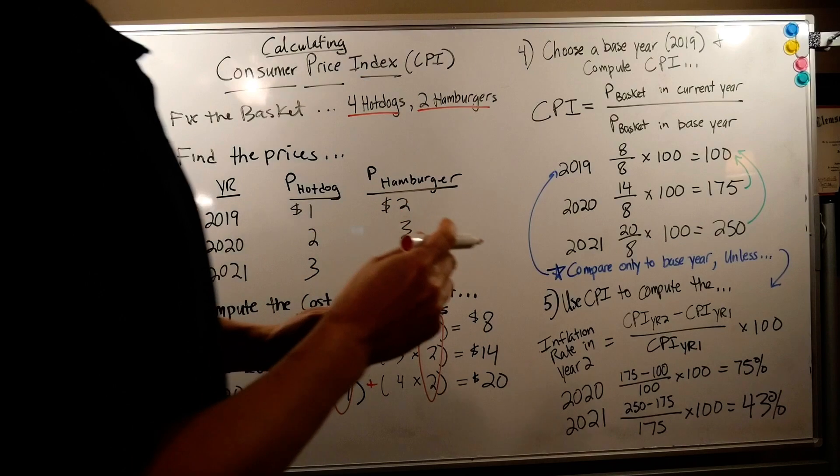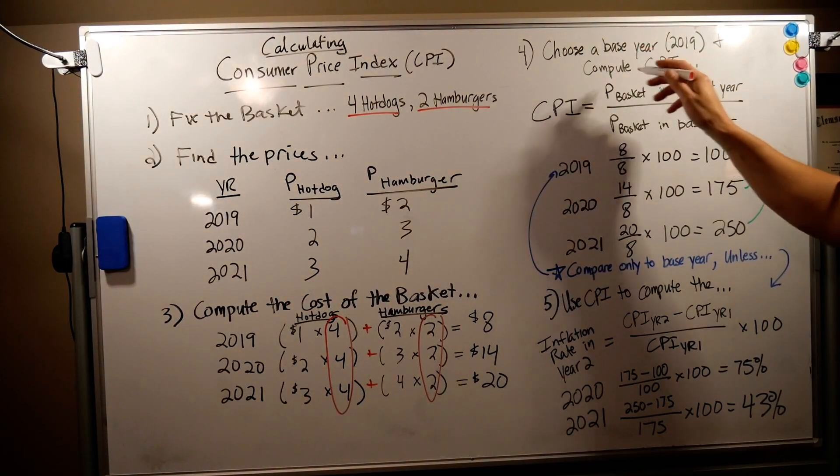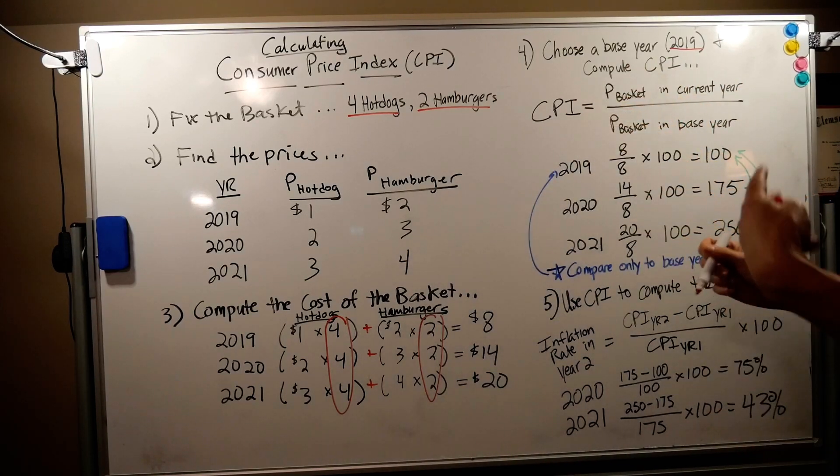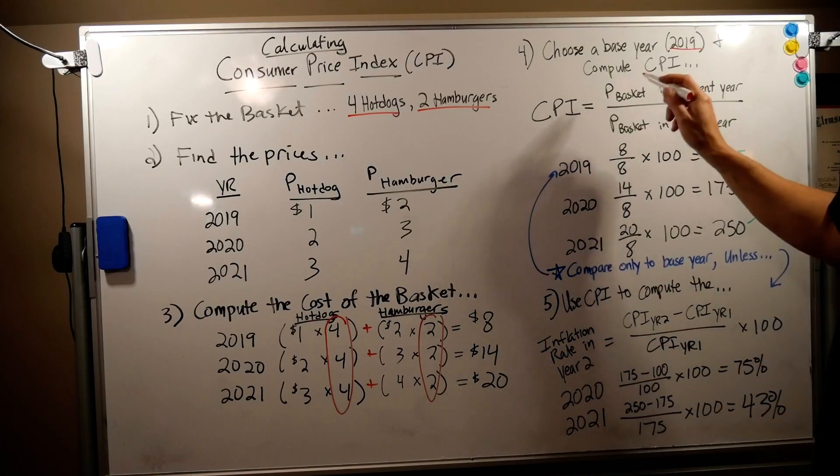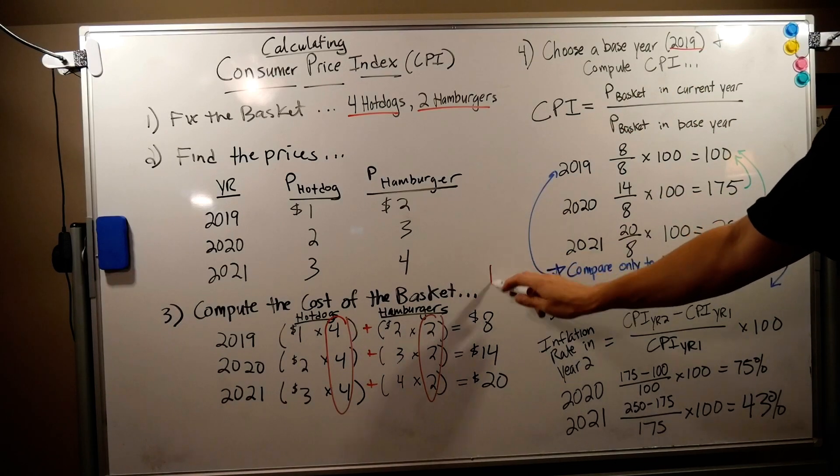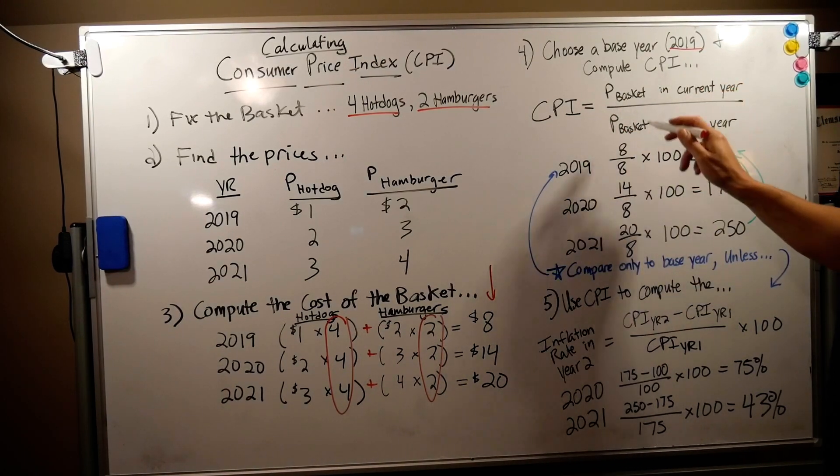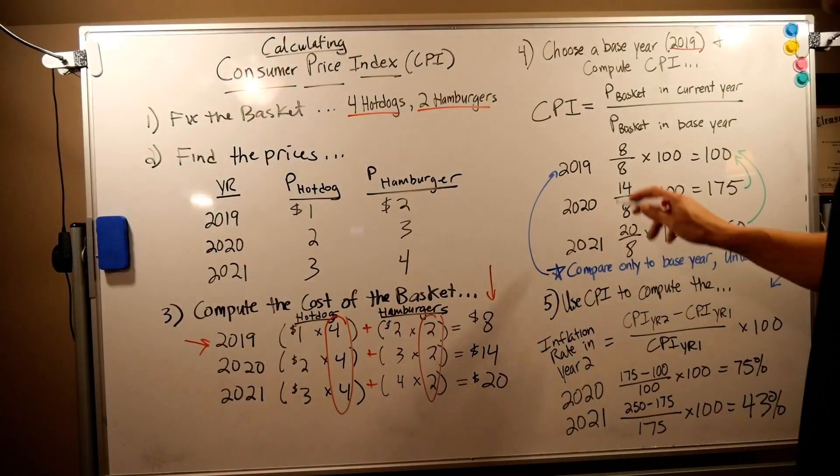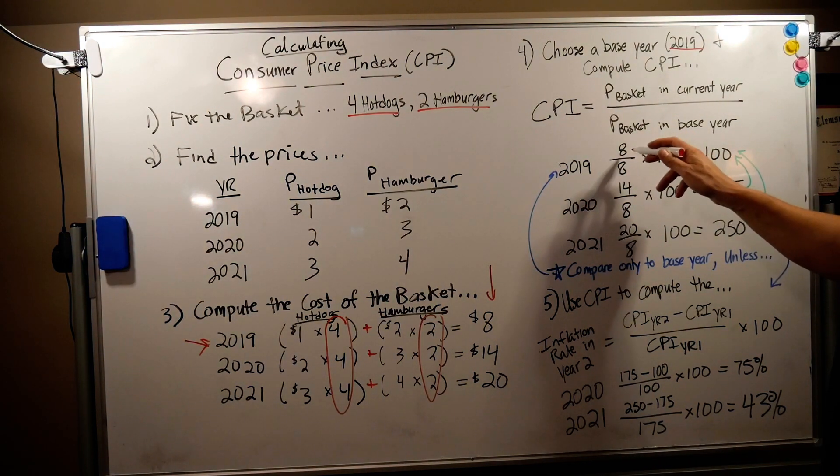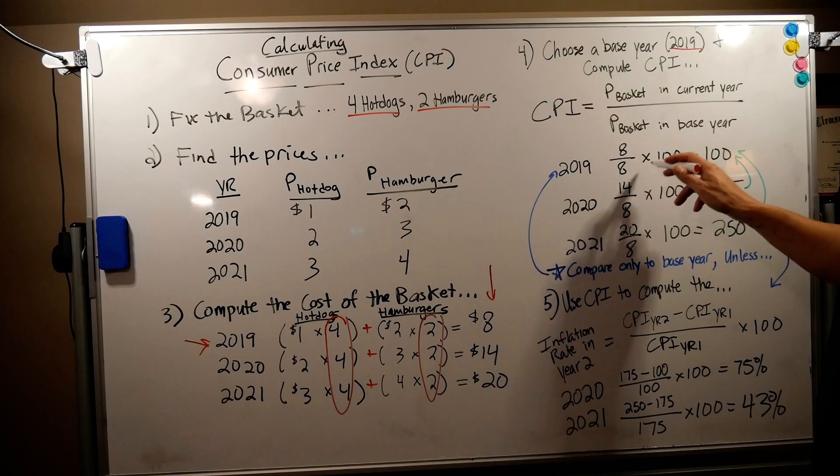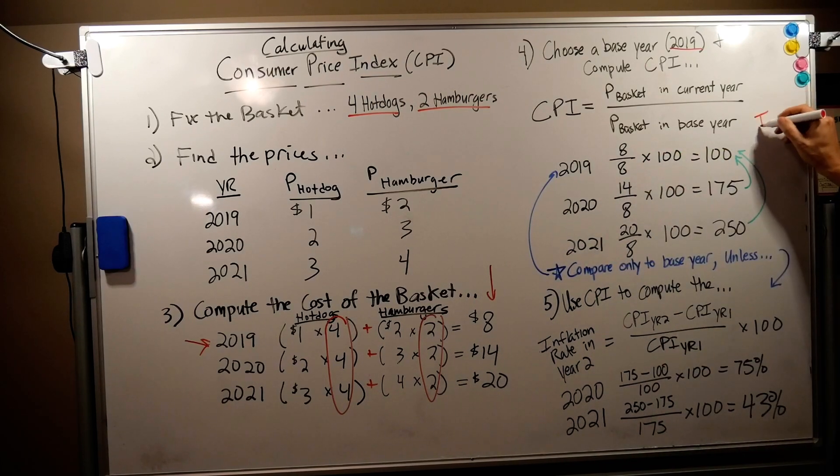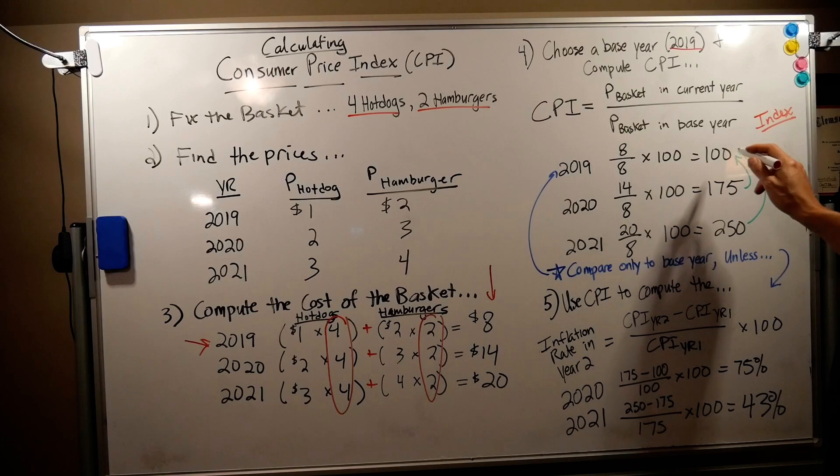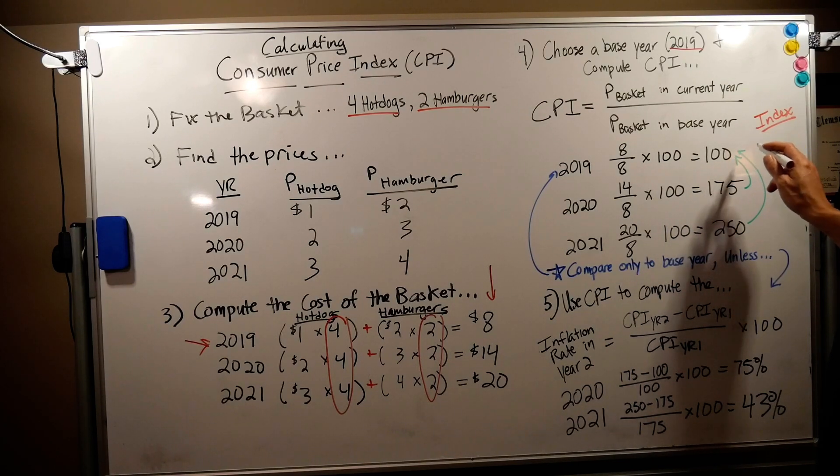Now how do we analyze this? We choose a base year, let's go with 2019 that's the first year, and let's compute CPI. Well CPI, much like how you compute the GDP deflator in the previous chapter, we take the price of a basket in the current year and we divide it by the price of the basket in the base year. 2019 is going to be our base year so the 2019 example is very simple: eight dollars over eight dollars because that's the price in the current year 2019 and the base year 2019 times 100. We're trying to create an index and we get a score of 100. From the previous chapter you always know the base year has a score of 100. That's very useful.